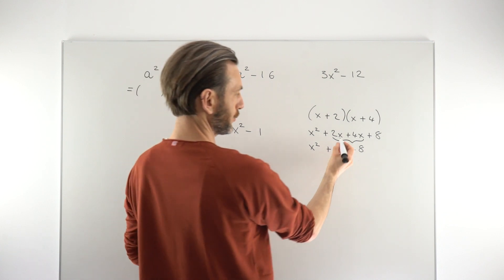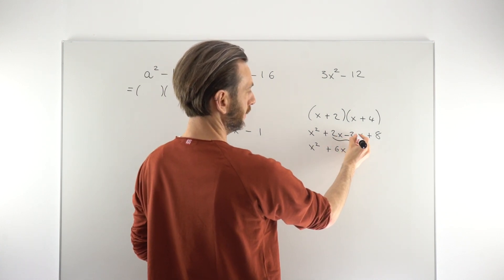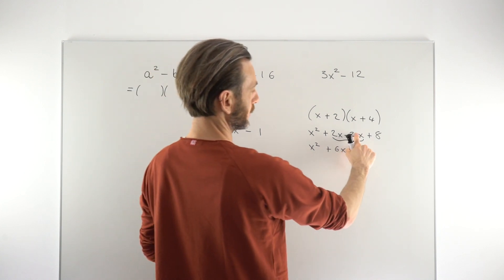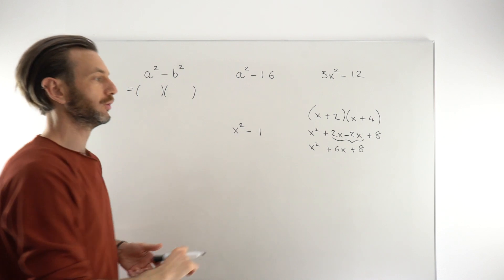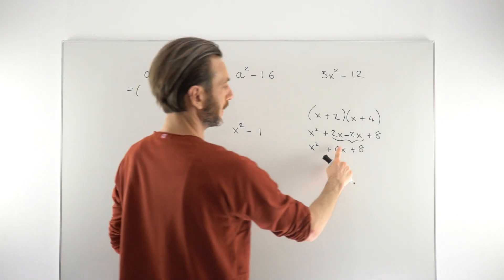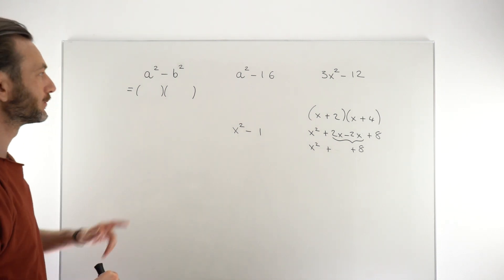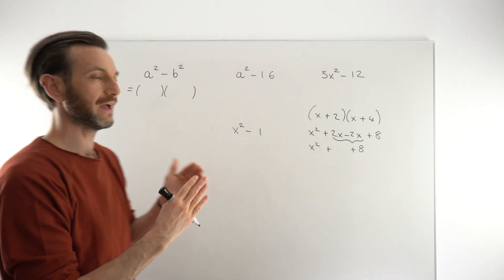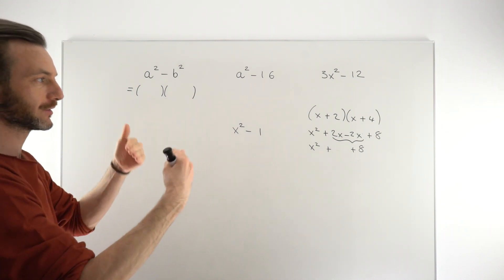We've ended up with 6x which was a combination of these two. But imagine if those two actually just disappeared, like if that one was also -2x. So -2x+2x would give you 0. That guy would disappear and you would just end up with two terms.